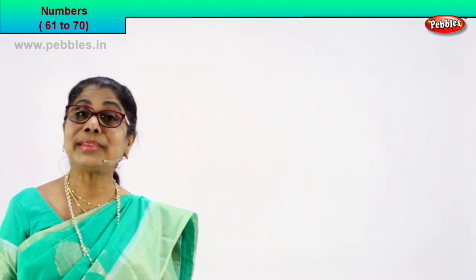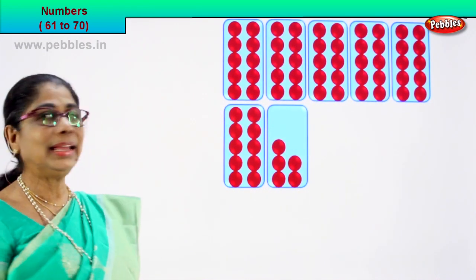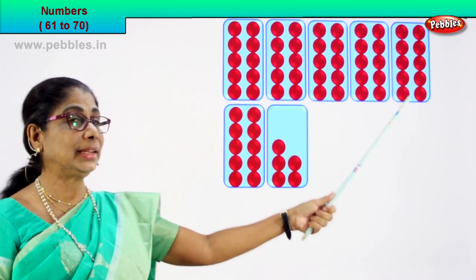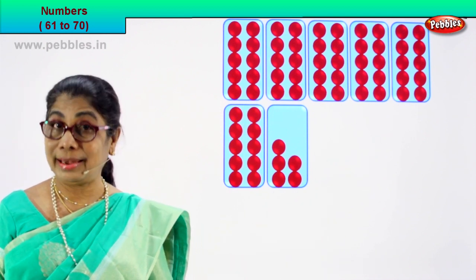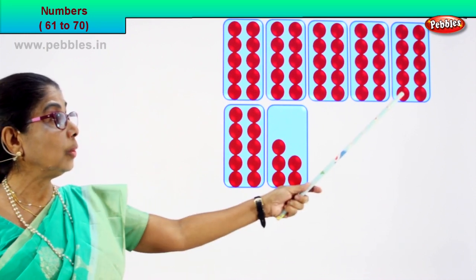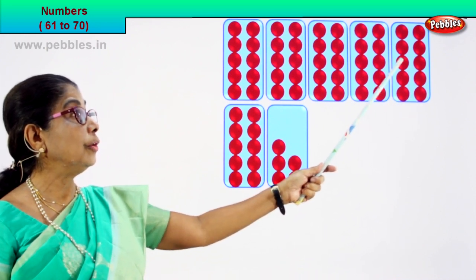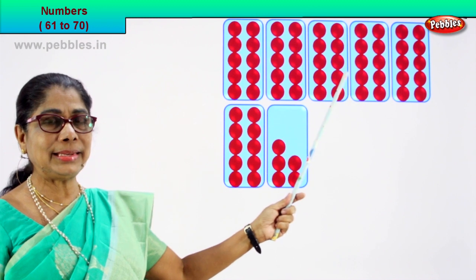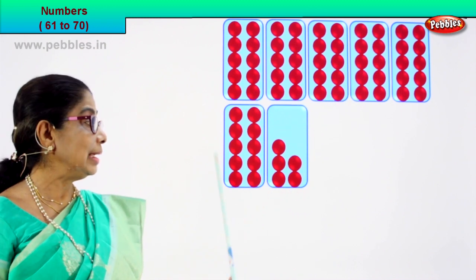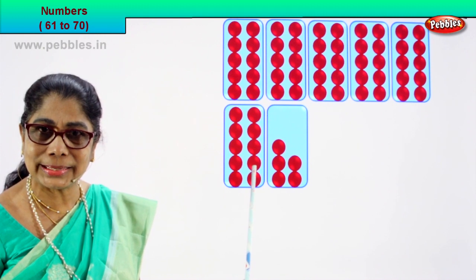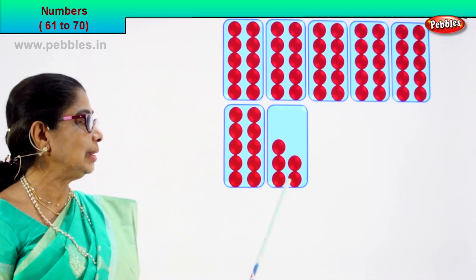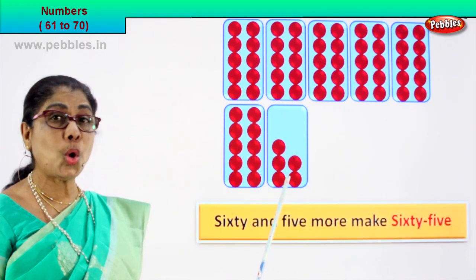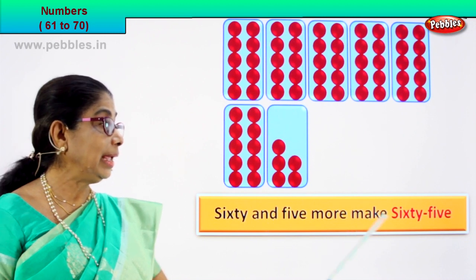Shall we go to our next number and learn to count? Let's count the number of boxes. One, two, three, four, five, six. And in each box, ten. Let's see if there are really ten. One, two, three, four, five, six, seven, eight, nine, ten. One ten, two tens, three tens, four tens, five tens, six tens. What is six tens? Sixty. And how many ones? One, two, three, four, five. So sixty and five more make sixty-five.